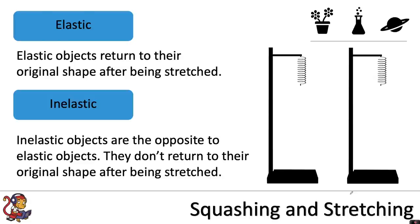Inelastic objects are the opposite to elastic objects. They don't return to their original shape after being stretched. So that's any object that you can stretch but it won't return to the shape that it started in. For example, blue tack. If you were to stretch blue tack and let go, it wouldn't automatically return to its original shape.